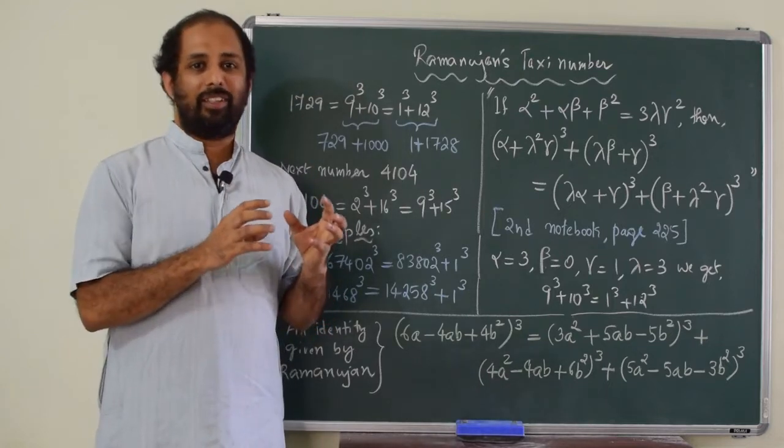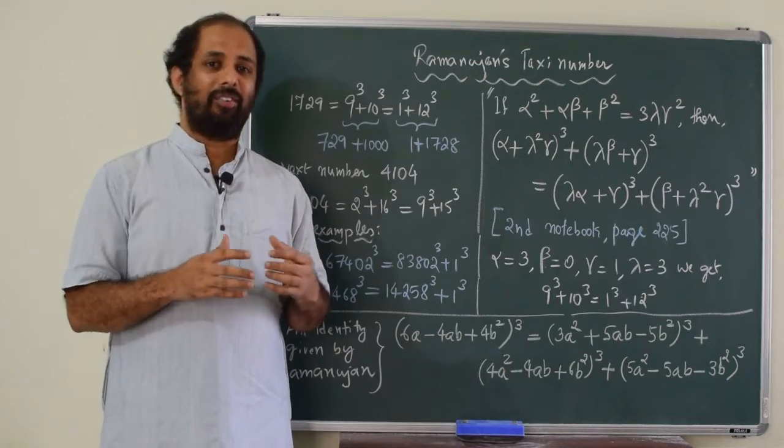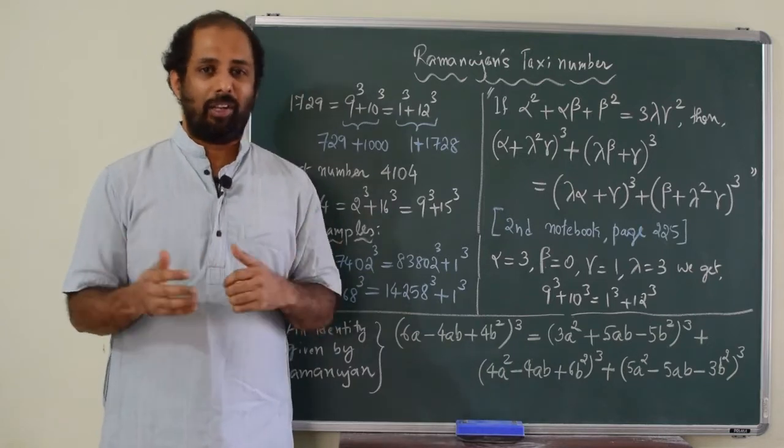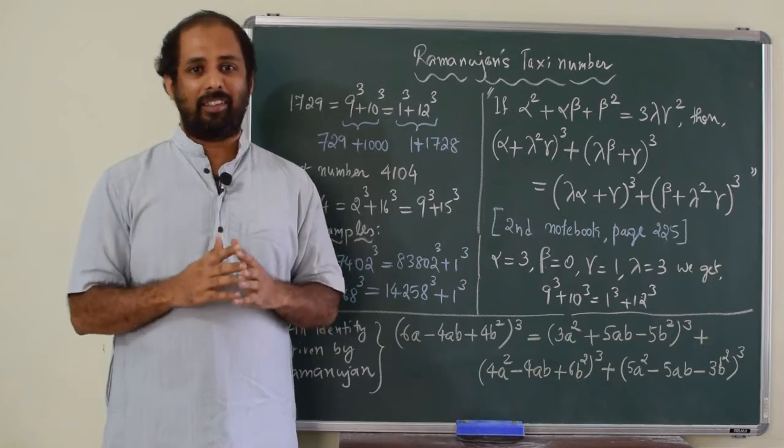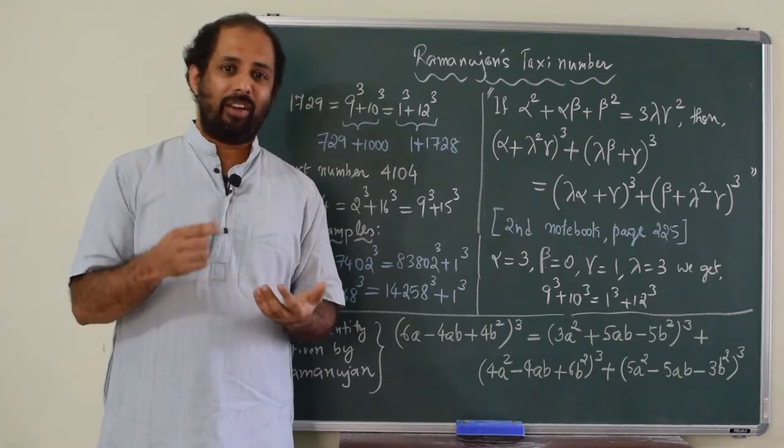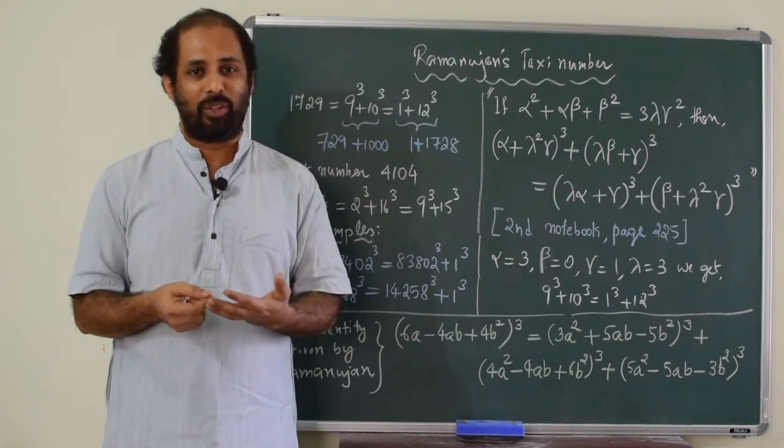See this shows the genius of Hardy, because Hardy was visiting Ramanujan, he was travelling by taxi. He had seen the taxi number 1729 and when he was travelling, he was working out. He was finding the factors of 1729.